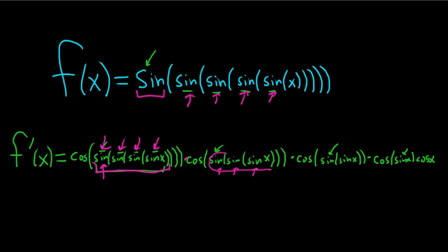Right? Well, the inside function here is this one. That's going to be cosine of sine times the derivative of the inside, which is just cosine x. So that is the answer — that's it.